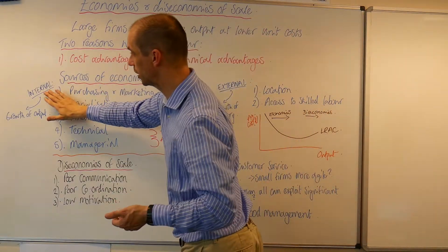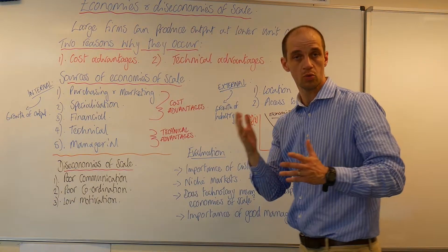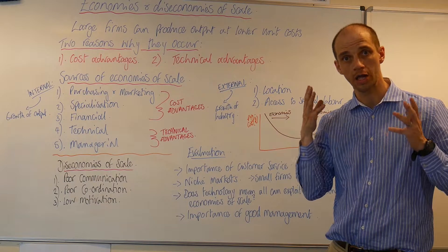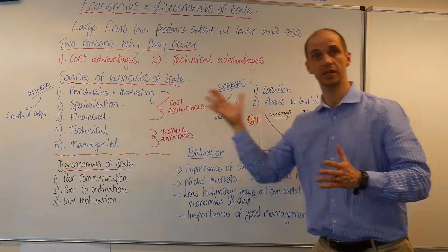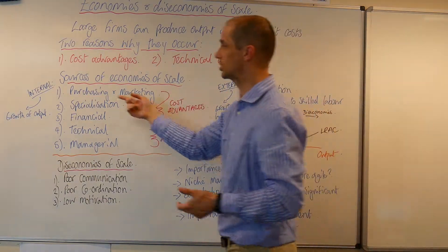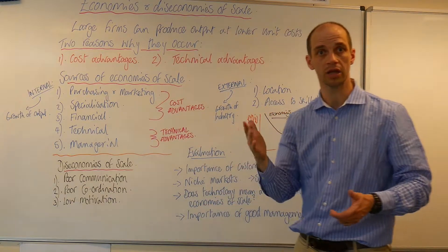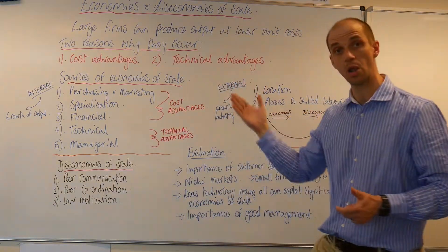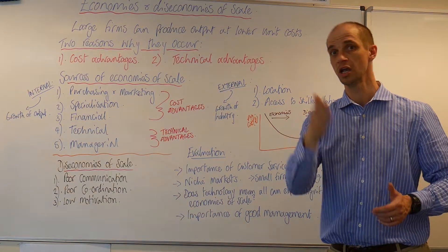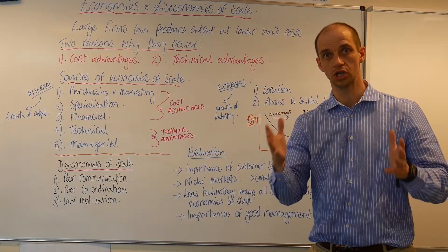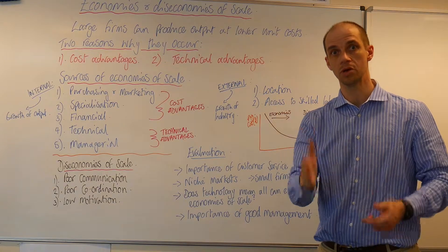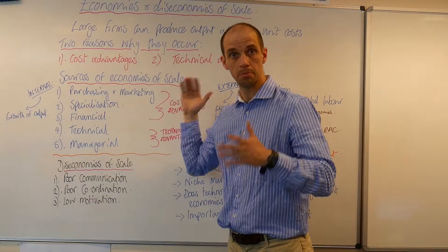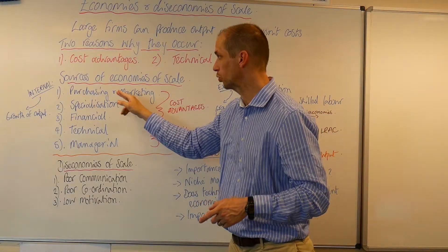These are all internal economies of scale, which are about growing output levels to exploit economies of scale. Such examples include purchasing or buying in bulk — if you buy in bigger quantities, you get bigger discounts and a lower average price per unit. You see that in the supermarket: if you buy a larger container of milk, you get a much better price per litre than if you buy a smaller container.